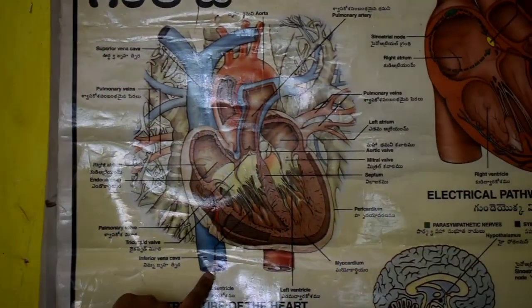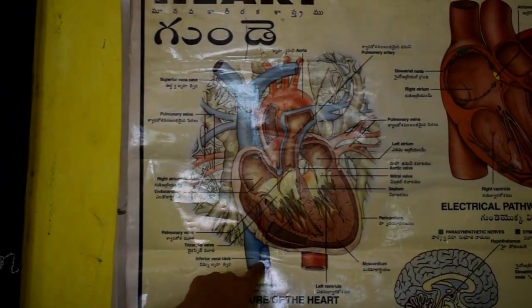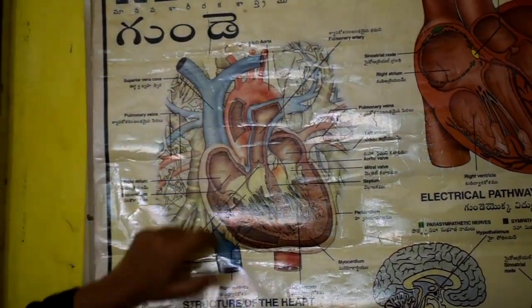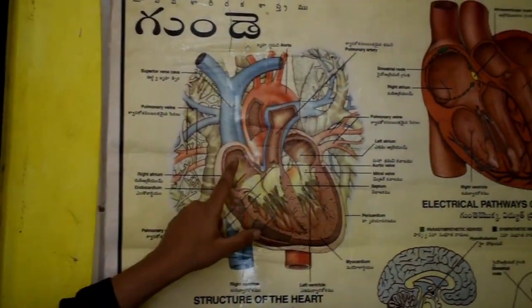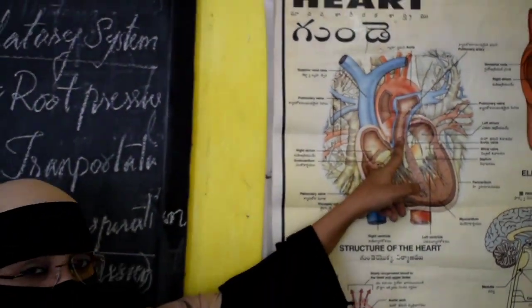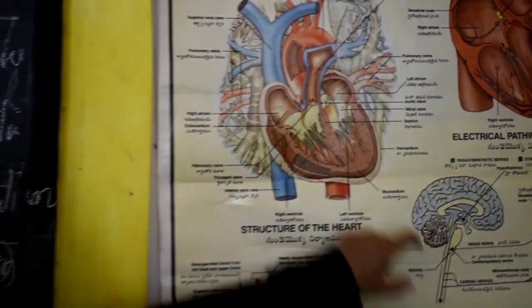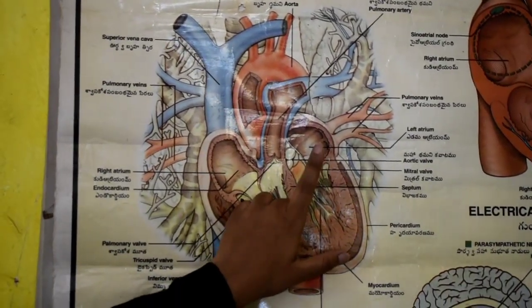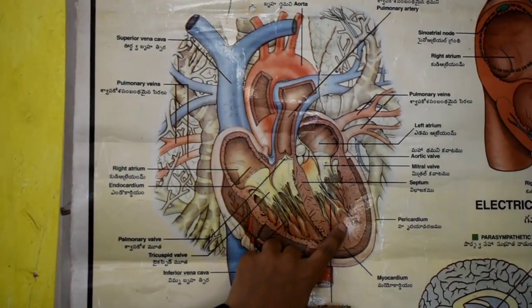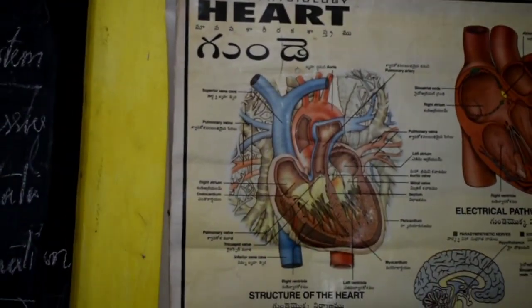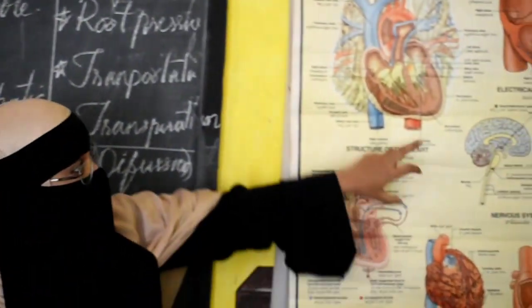The superior vena cava and the inferior vena cava collect deoxygenated blood from the upper and lower parts of the body respectively, and both enter into the right atrium. From the right atrium, deoxygenated blood enters the right ventricle, then into the pulmonary artery, goes to the lungs where it gets purified, and comes back via the pulmonary veins as oxygenated blood to the left atrium. From the left atrium the blood enters the left ventricle and is pumped into the aorta, which supplies blood to all parts of the body.